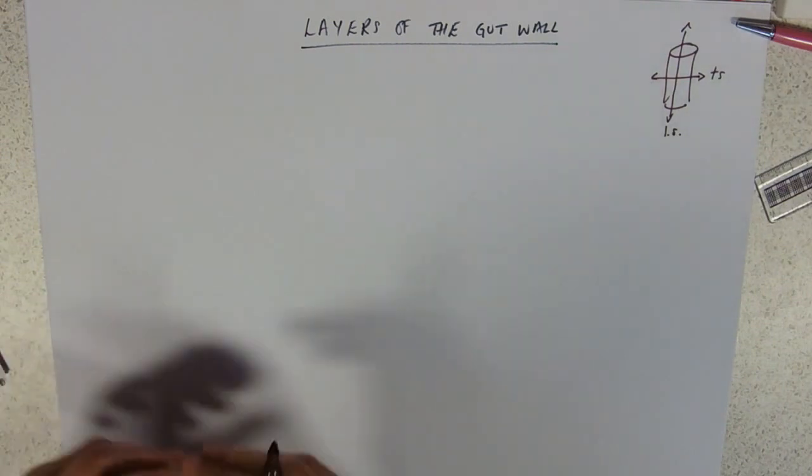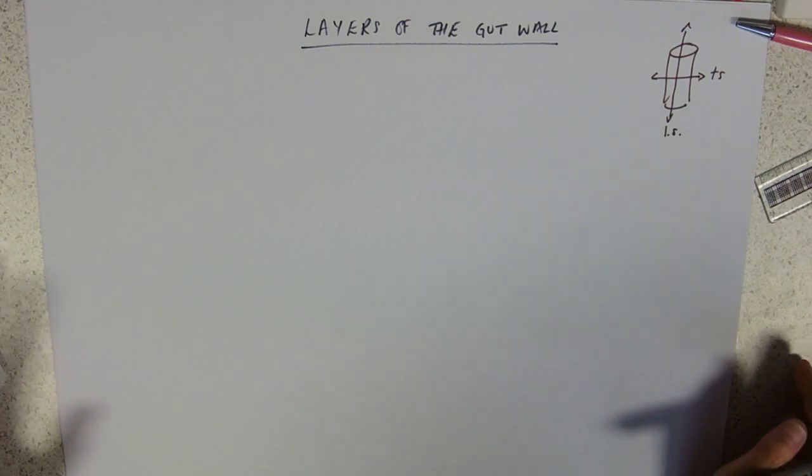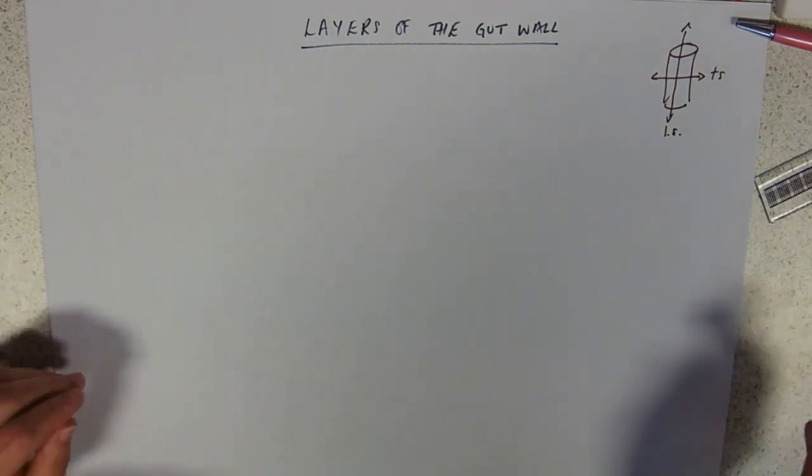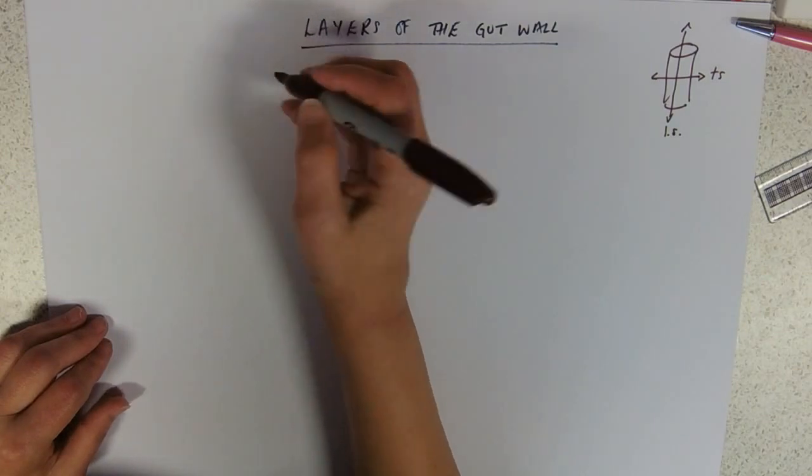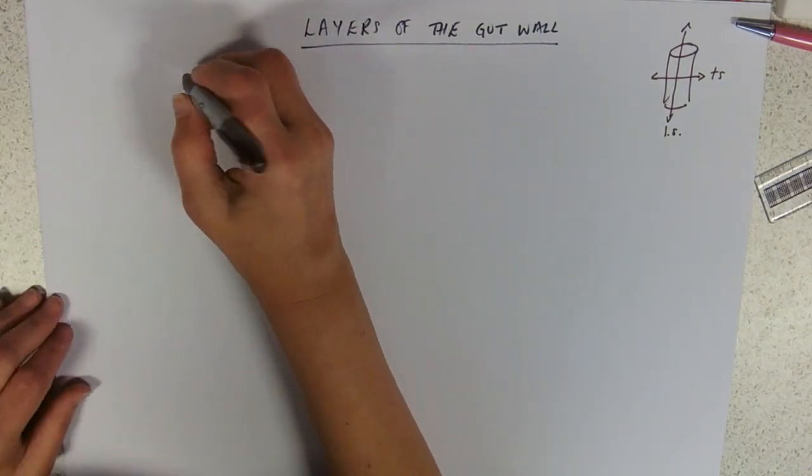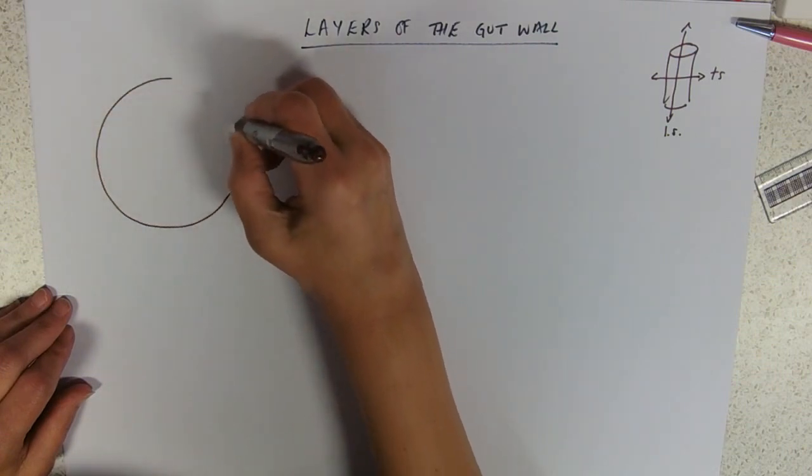I will try and remember to do a little bit about how you tell the difference between a transverse and a longitudinal section. The gut wall is pretty circular in outline being a tube.